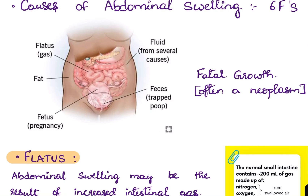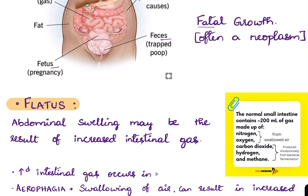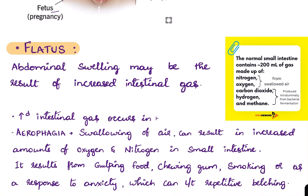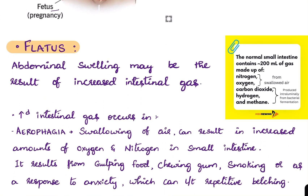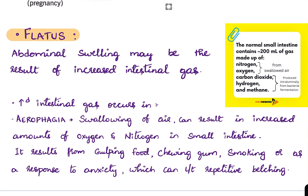The six F's are: flatus, fat, fetus, fluid, feces, and the sixth one is fatal growth — often a neoplasm.